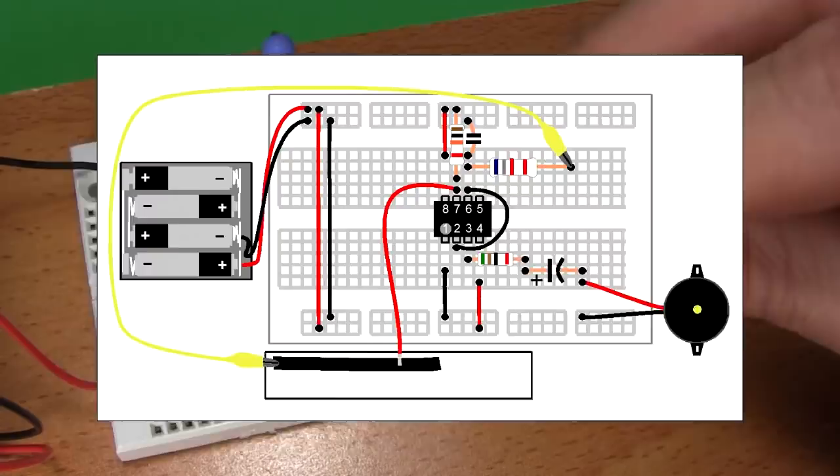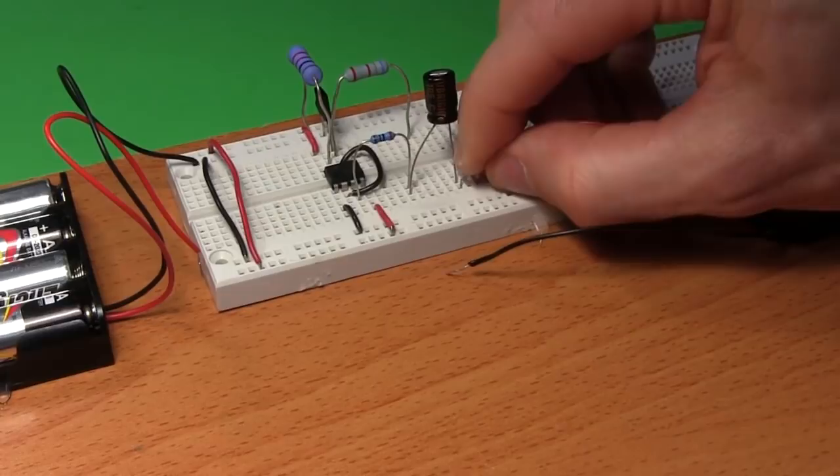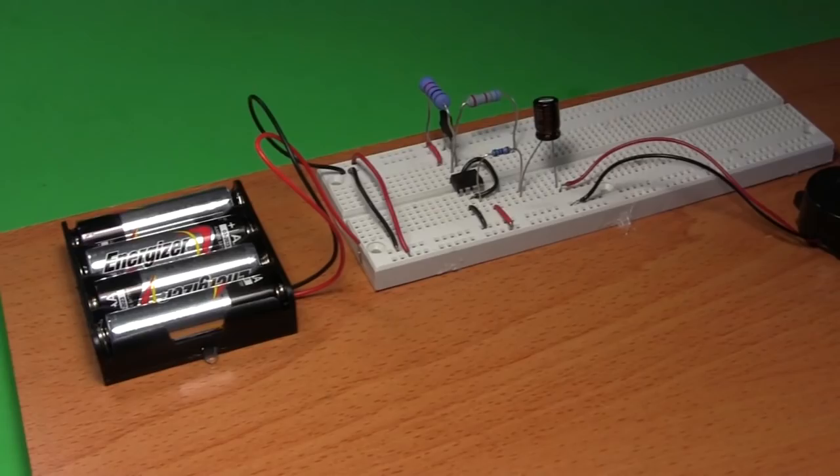And now for the speaker. Plug the end of either of its wires into this hole, next to the negative of the capacitor. Plug the other wire in this hole, connecting it to battery negative.